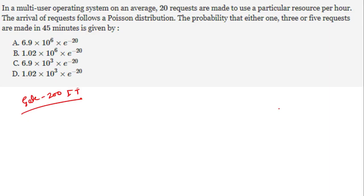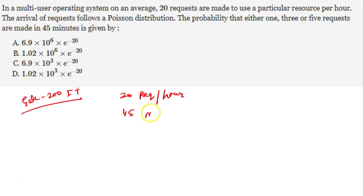In the GATE question, it says on average 20 requests are made to use a particular resource per hour. It is given per hour. So 20 requests in one hour — what can we expect in 45 minutes? In every 3 minutes one request is coming, so in 45 minutes on average 15 requests will come. This average is Lambda, the mean number of requests in 45 minutes. So Lambda equals 15.